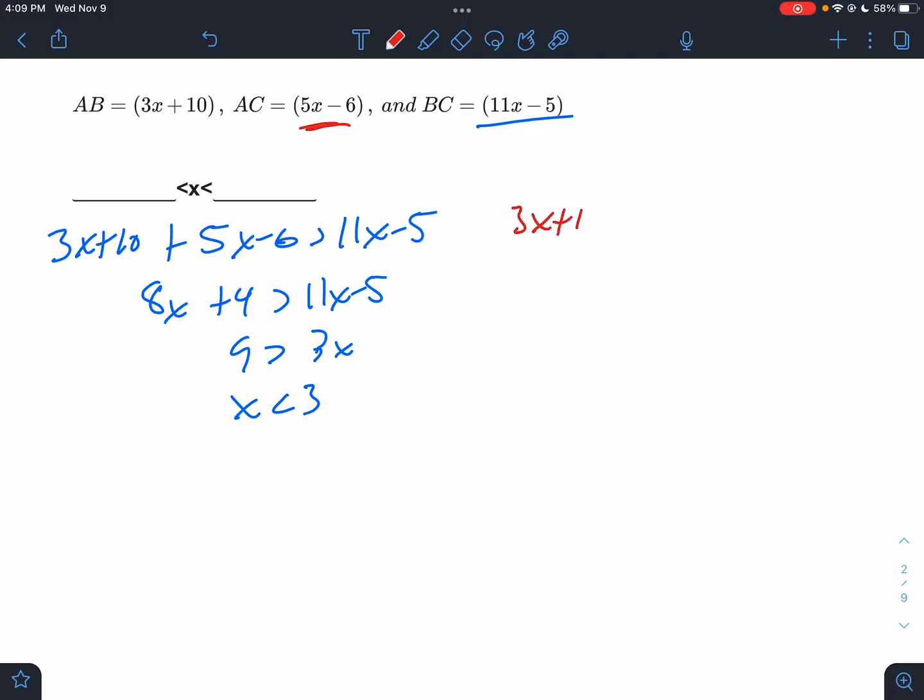So 3x + 10 plus 11x - 5 must be greater than 5x - 6. So this would be 14x + 5 must be greater than 5x - 6. So 9x must be greater than negative 11. X must be greater than negative 11 over 9, that must be true.